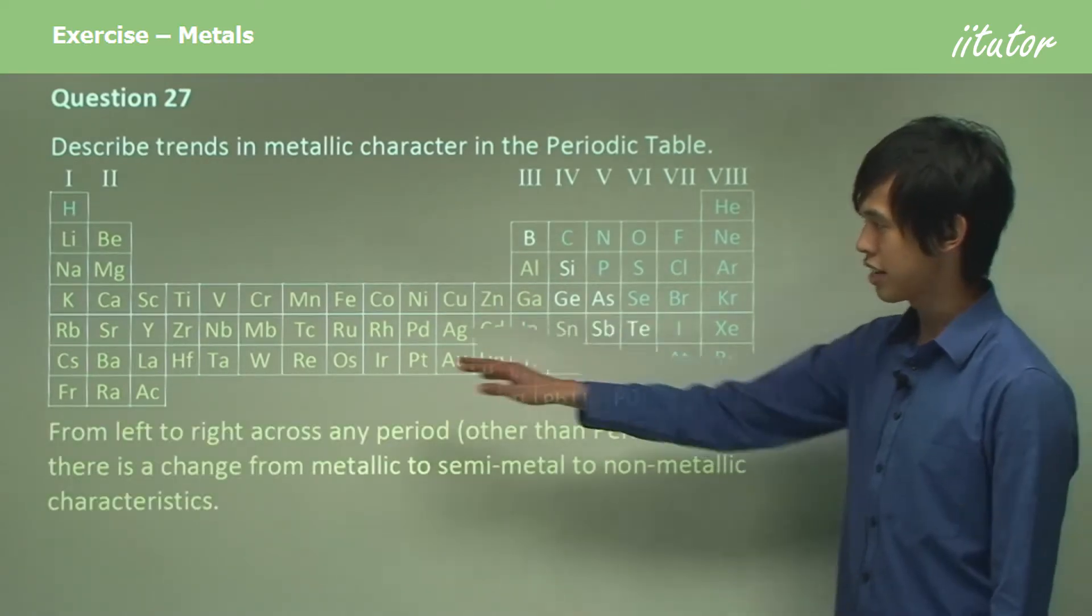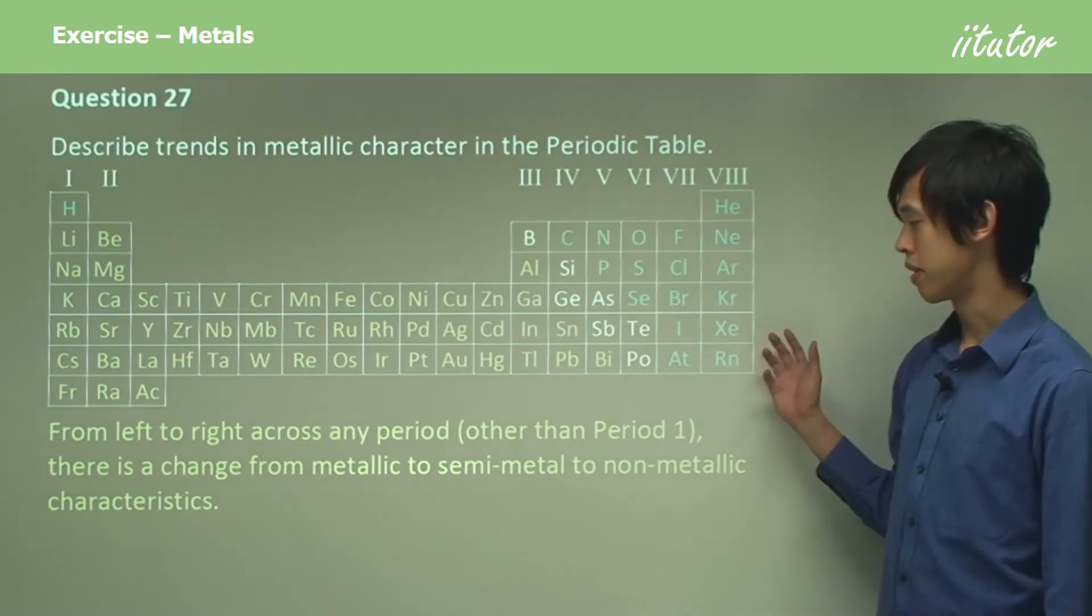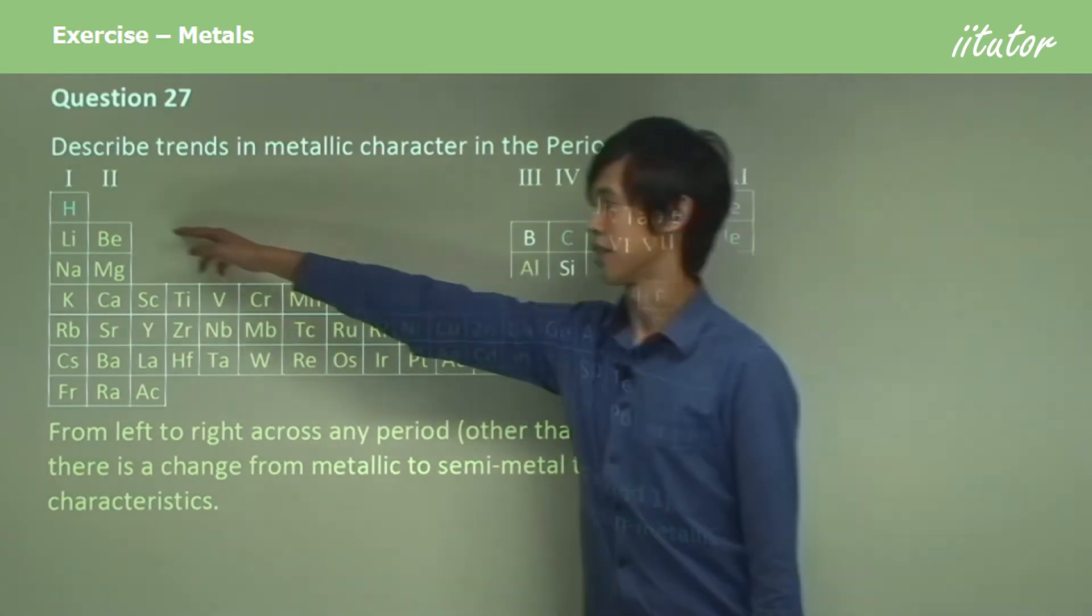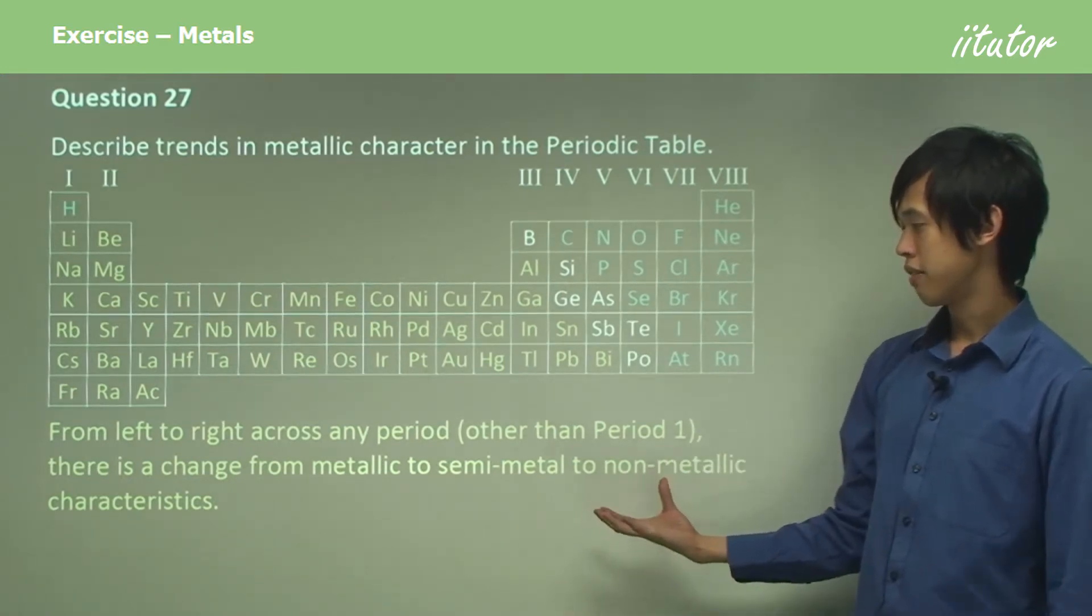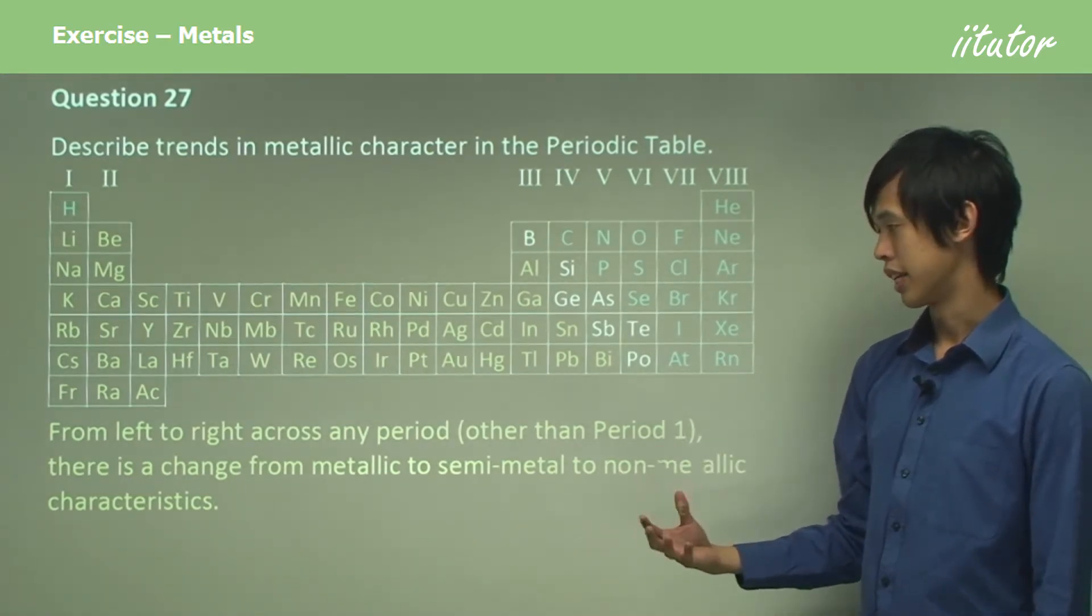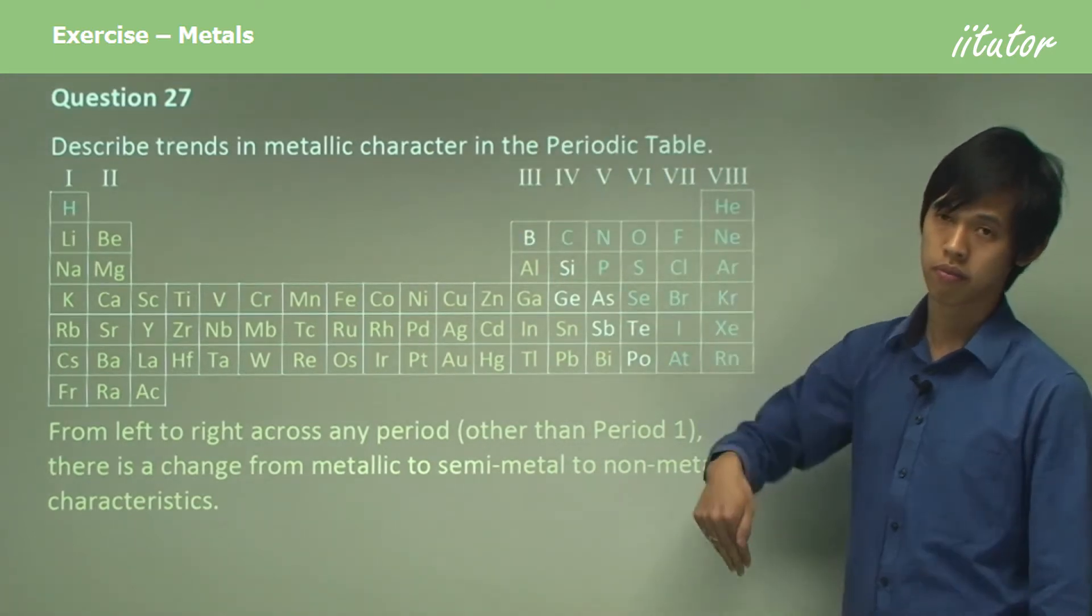From left to right across any period other than period 1, there is a change from metallic to semi-metal to non-metallic characteristics. So the metallic character from left to right decreases.